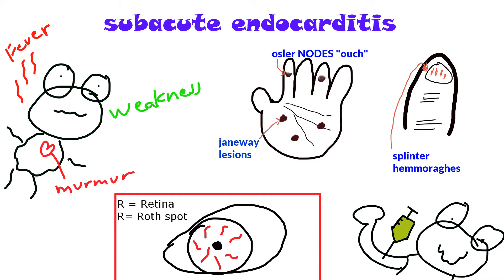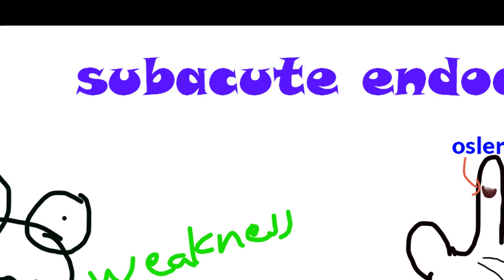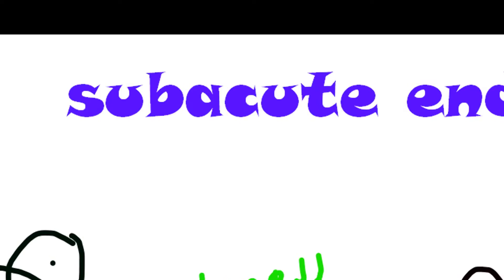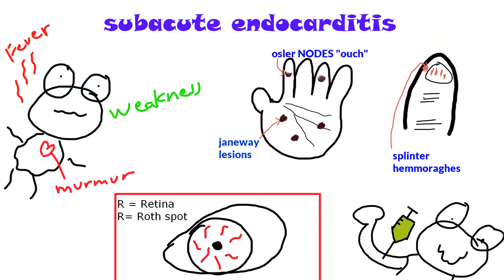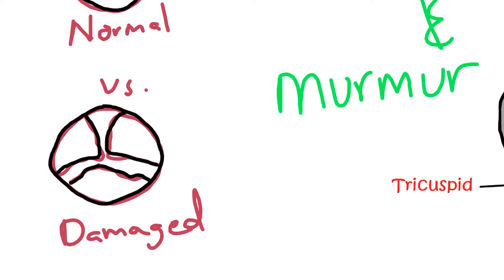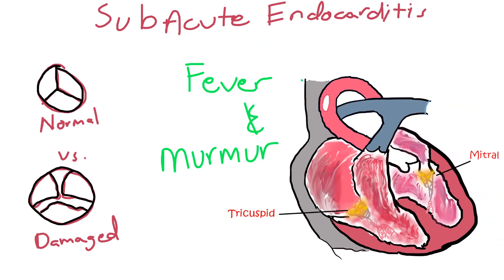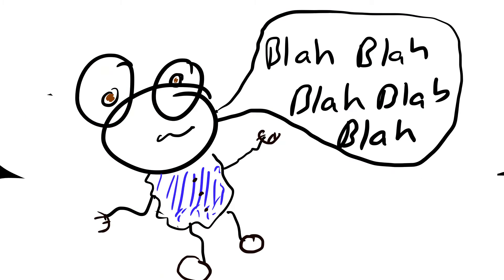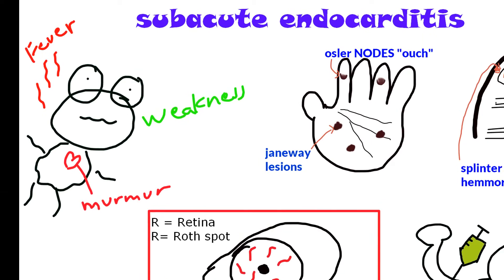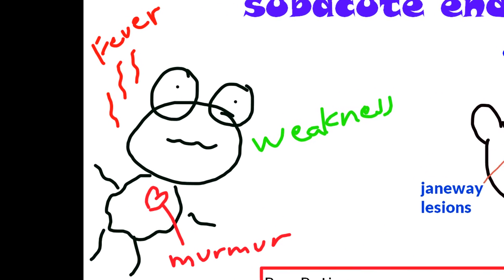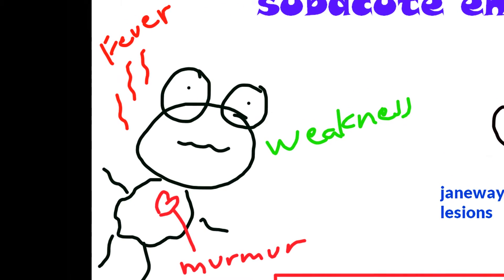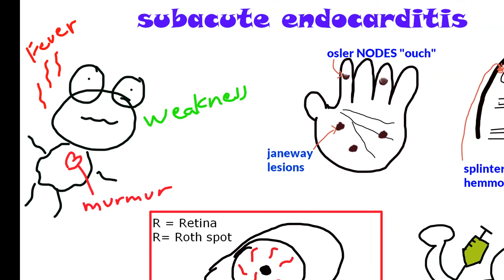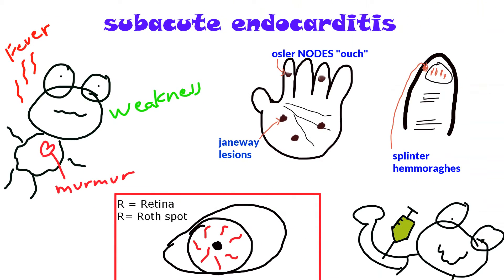The difference between acute endocarditis — previously covered with Staph aureus — versus subacute endocarditis with Staph epidermidis, is that subacute infections can only happen with a damaged heart valve or prosthetic valves. It uses its virulence factor fibronectin to attach onto the damaged heart valve. On presentation, they will most likely have a murmur and a fever, and may also have systemic weakness and weight loss.